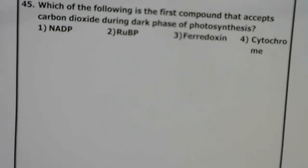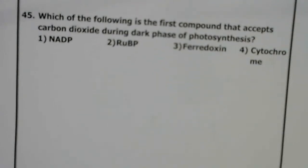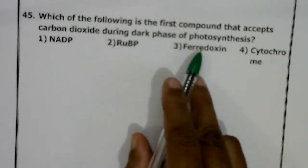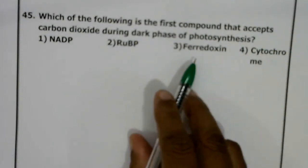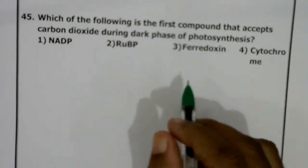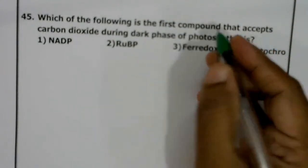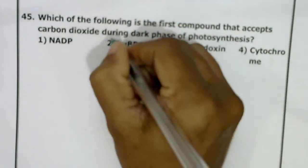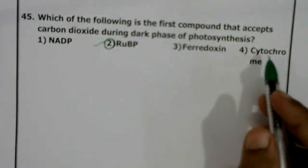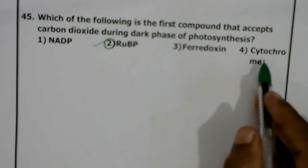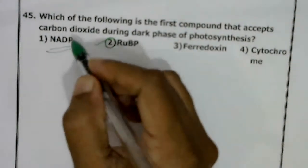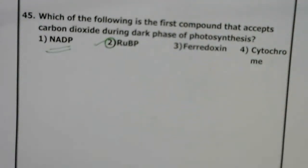Which is the first compound that accepts CO2 during the dark phase of photosynthesis? The initial acceptor of CO2 during the dark phase or C3 cycle is RUBP (ribulose bisphosphate). Ferredoxin and cytochrome are intermediate electron carriers; NADP is a coenzyme. Correct answer: RUBP. Thank you for watching.